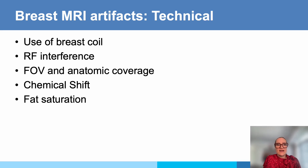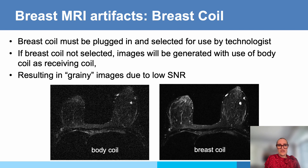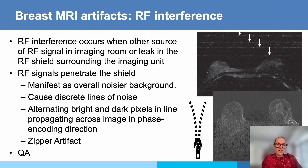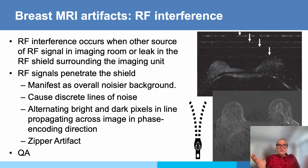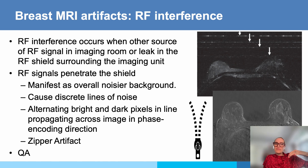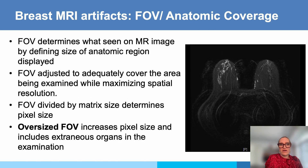Technical artifacts are related to coil, RF interference, and coverage. Make sure the breast coil is plugged in — if you use the body coil it will give you a grainy image due to lower SNR. RF interference presents as zipper artifacts running across the image, meaning there is damage to the Faraday cage — usually an open door or a lamp left too close to the magnet from biopsy use. This can usually be easily addressed when you see those zipper artifacts.